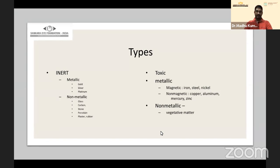Inert foreign bodies can be metallic — like gold, silver, and platinum — or non-metallic, such as glass, carbon, stone, porcelain, plaster, or rubber. The toxic ones can create a reaction inside the eye and are subdivided into metallic and non-metallic.